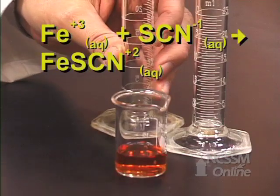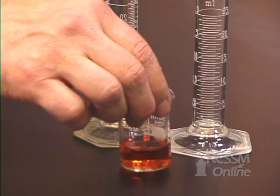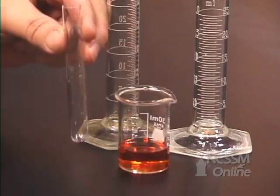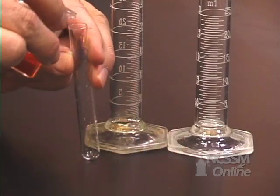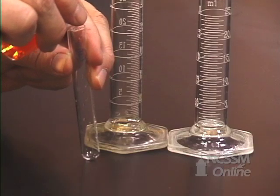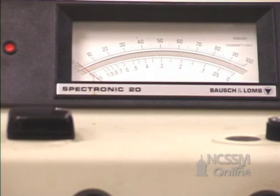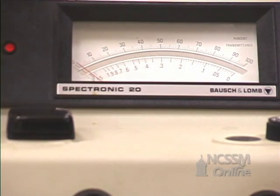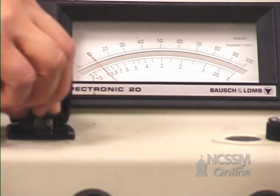Swirl them so they mix and transfer your solution to the cuvette. You will then read the percent transmittance of each of the equilibrium mixtures that you have prepared.